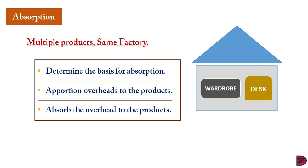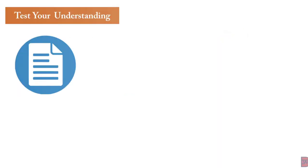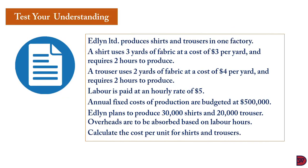After apportioning overheads to the products based on the suitable criteria, each overhead allocated to the product is then absorbed onto the quantity produced to arrive at the overhead cost per unit. Let's test our understanding: Edlin Limited produces shirts and trousers in one factory. A shirt uses 3 yards of fabric at $3 per yard and requires 2 hours to produce. Trousers use 2 yards at $4 per yard and also require 2 hours. Labor is paid at $5 per hour. Annual fixed costs are budgeted at $500,000. Edlin plans to produce 30,000 shirts and 20,000 trousers. Overheads are to be absorbed based on labor hours.